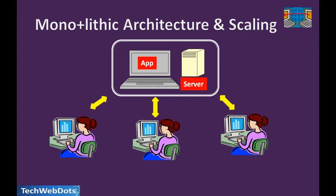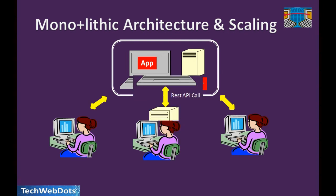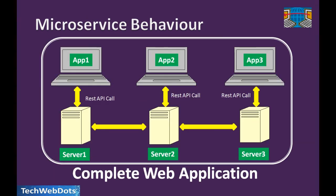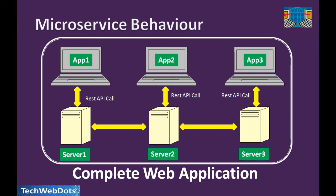To avoid these problems, the concept is: if we have one customer application, one vendor application, and one new product application, they will be easily manageable. Looking at this architecture diagram, we have a single web application but inside it there are mini applications — microservices. Every service is deployed on a different server, and those applications communicate with each other through REST API calls.